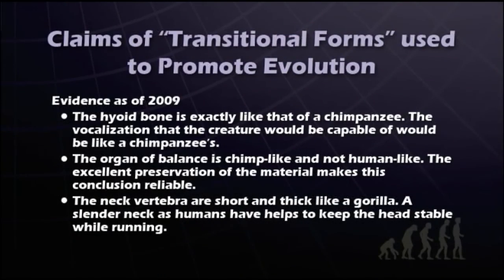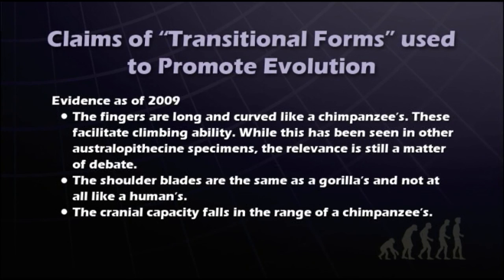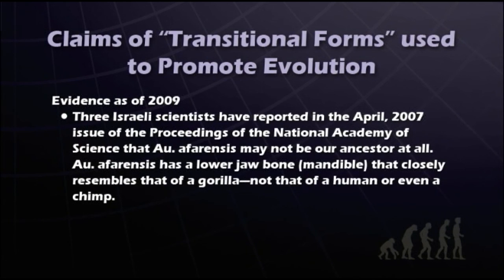Let's read a few quotes related to Lucy based on fairly recent evidence. The hyoid bone is exactly like that of a chimpanzee — the vocalization would be like a chimpanzee's. The organ of balance is chimp-like and not human-like. The neck vertebrae are short and thick like a gorilla; a slender neck, as humans have, helps keep the head stable while running. The fingers are long and curved like a chimpanzee's, facilitating climbing ability. The shoulder blades are the same as a gorilla's and not at all like a human's. The cranial capacity falls in the range of a chimpanzee's. Also, in 2007, an issue of the Proceedings of the National Academy of Science said Lucy's species was not our ancestor at all and has a lower jawbone that closely resembles that of a gorilla.